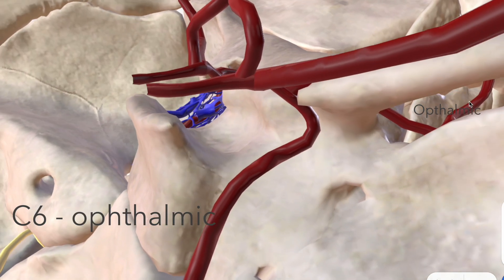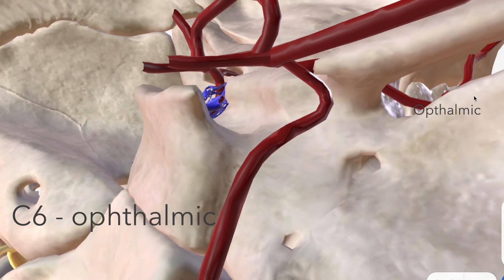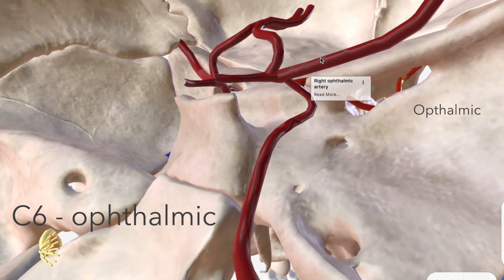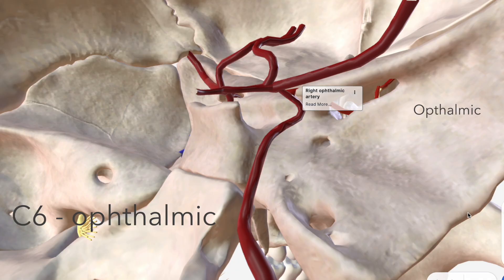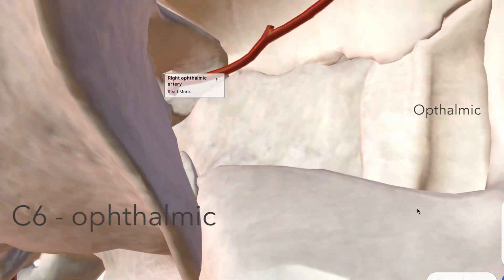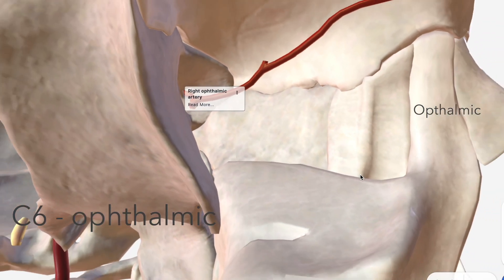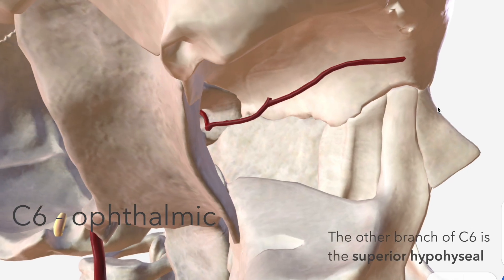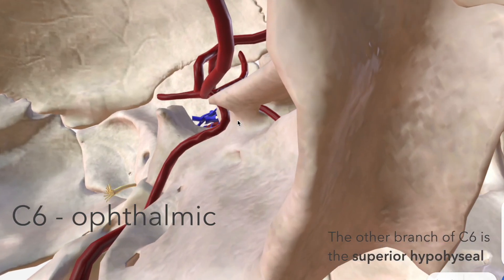The ophthalmic portion, C6, has two branches. The first is the ophthalmic artery, a very important artery passing through the optic canal to supply the orbit, dividing into the supratrochlear artery and the dorsal nasal artery, which supplies some of the more superficial part of the nose.